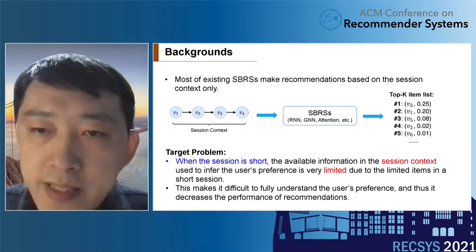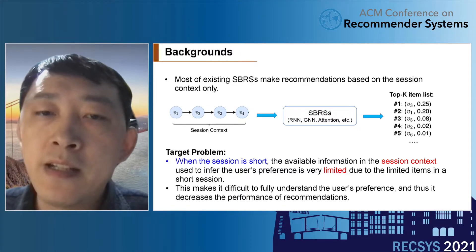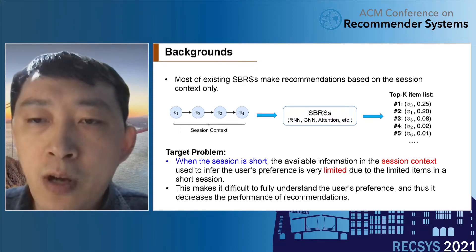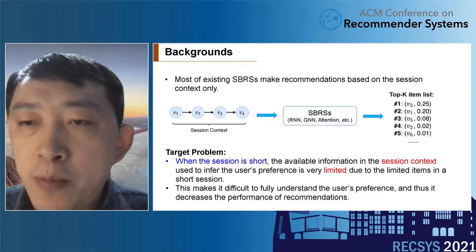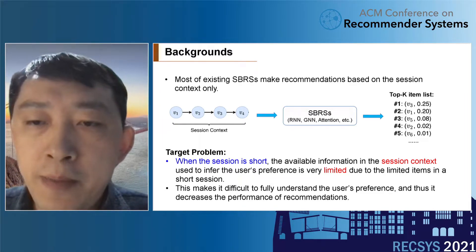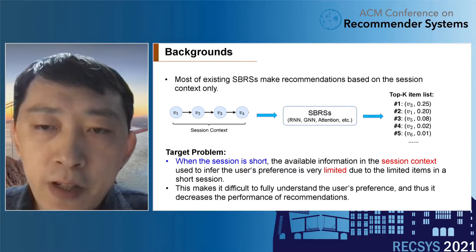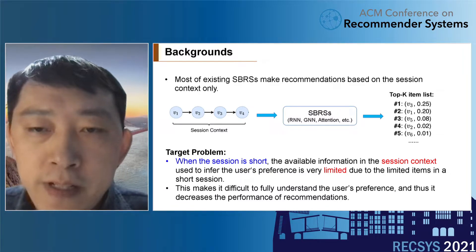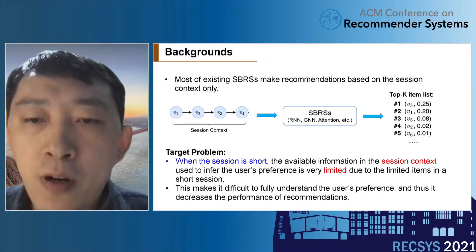Most existing methods make recommendations only based on the session's context. They use the session context to infer the user's dynamic preference in an ongoing session and output a top-k item list. However, when a session is short, the available information in the session context is very limited due to the limited items. This makes it difficult to fully understand the user's current preference, and the inferred user preference becomes unreliable, decreasing recommendation performance.